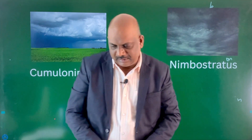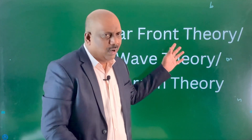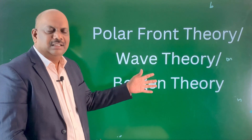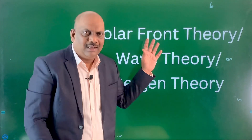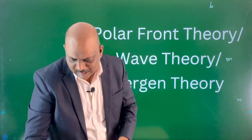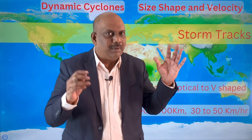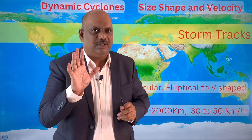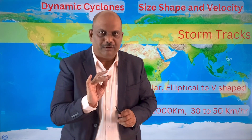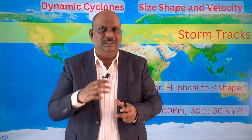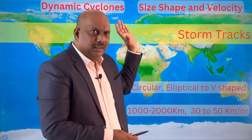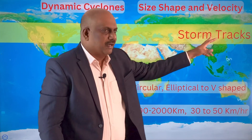The polar front theory, also called the wave theory or Bergen theory, explains cyclogenesis — the formation of temperate cyclones — and we will discuss that in our coming lectures. To recap: temperate cyclones form because of the convergence of a cold air mass and a warm and moist tropical air mass. This creates four distinct regions — warm front, warm sector, cold front, and cold sector — each with different weather events. Under the influence of westerlies, a temperate cyclone moves from west to east, and the tracks etched by it are called storm tracks.